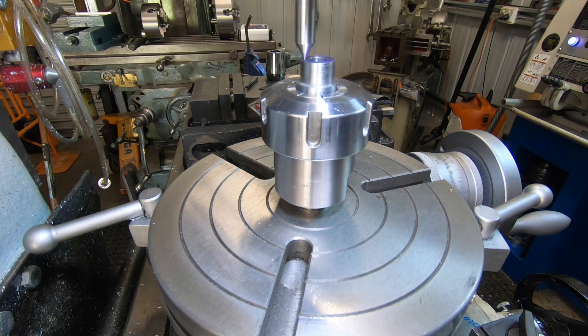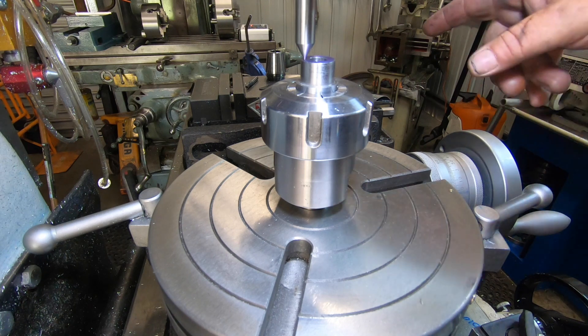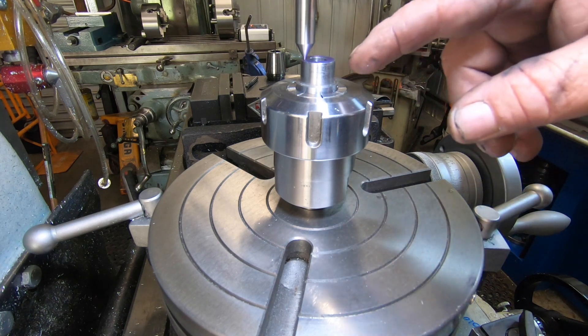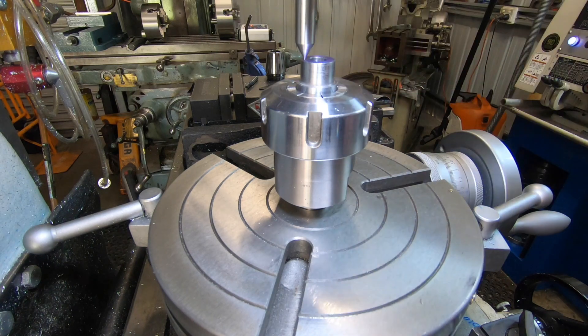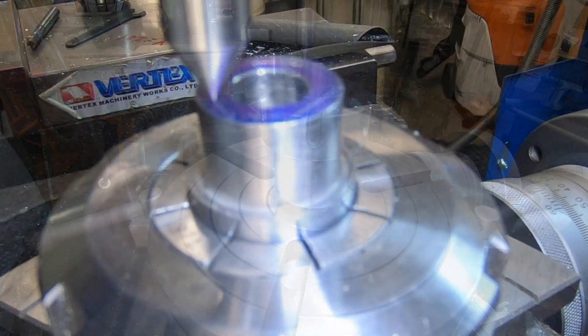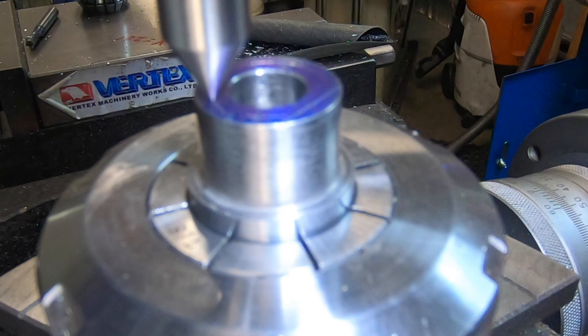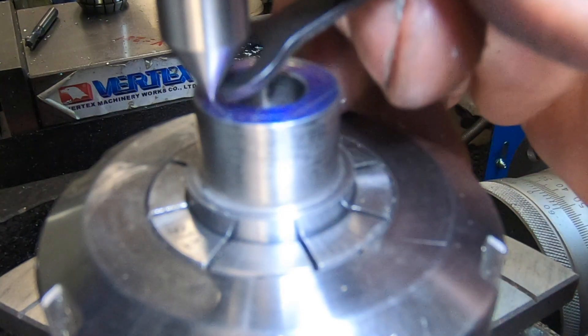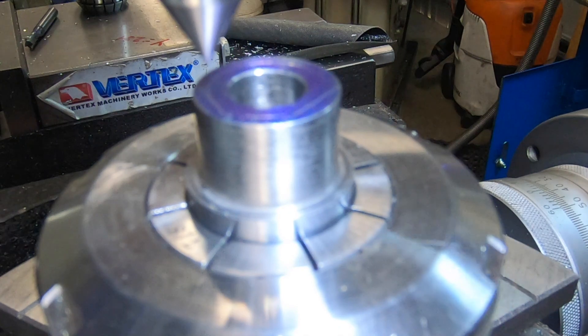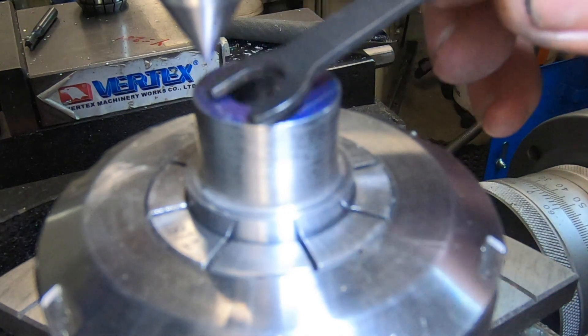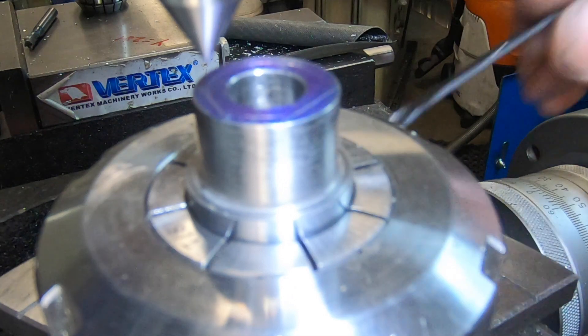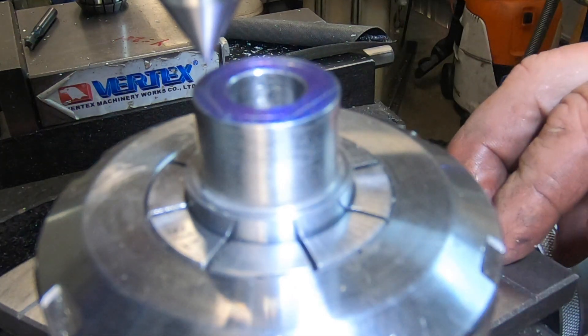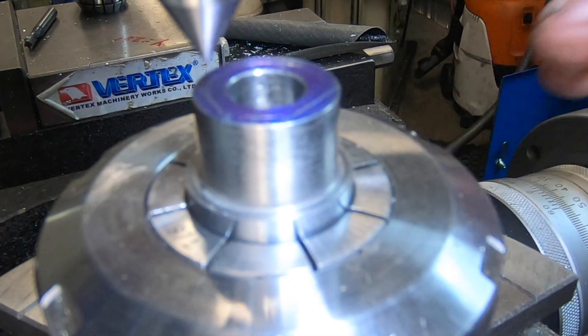Now what I'm going to do is set up an indicator on the X axis so I can move and bring that scribe line in closer. I'll get that scribe line, the one under that pointer there, running true with the X axis, and that's where I'll start from.